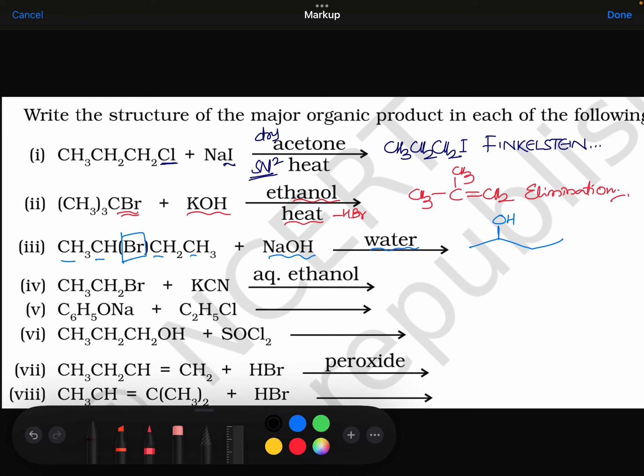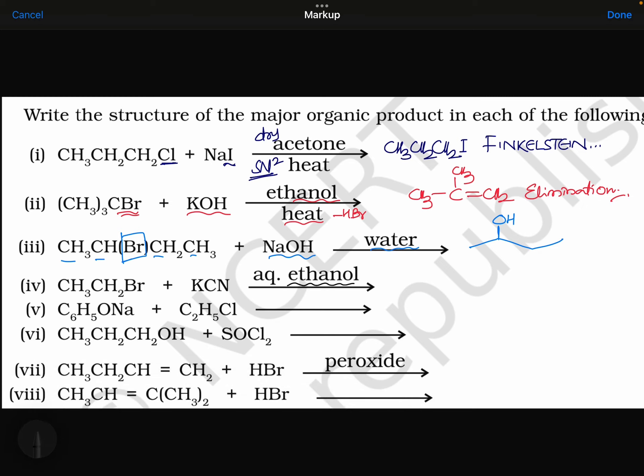Go for the next. Aqueous ethanol. And you are using here KCN. KCN, when you are using, this bromine will be replaced by CH3, CH2, cyanide will come. CH3CH2CN. Cyanide. Okay, now. Propane nitrile or you say ethyl cyanide.